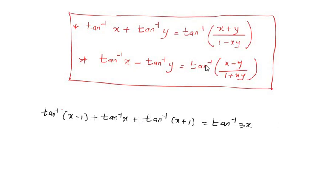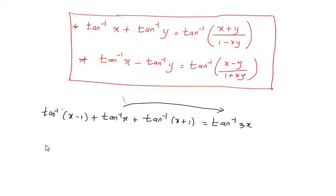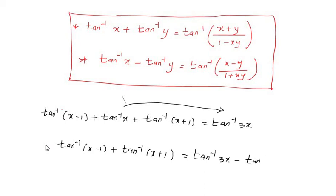Now from the given equation, we move tan inverse of x to the right hand side. So tan inverse of (x minus 1) plus tan inverse of (x plus 1) equals tan inverse of 3x minus tan inverse of x.